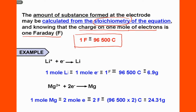The first example is lithium. The lithium ion needs one mole of electrons to discharge and become a lithium atom. This means one mole of lithium requires one mole of electrons, equal to one Faraday, which is 96,500 Coulombs, to produce 6.9 grams.